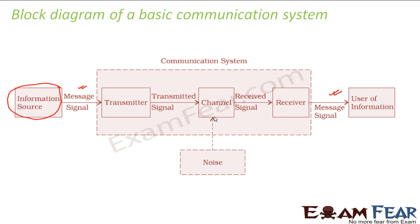Another small thing to note here: I have been using the word transmitter. Sometimes in your textbooks or over the internet, you might come across the term transducers, and you might wonder that the purpose of a transducer looks very similar to the purpose of a transmitter. Then why do we have two different terms? Let me talk about transducer and transmitter for two minutes so that you are clear with the difference. Why do we have a transmitter? So that it can convert the type of signal into a type of signal which is capable of transmission.